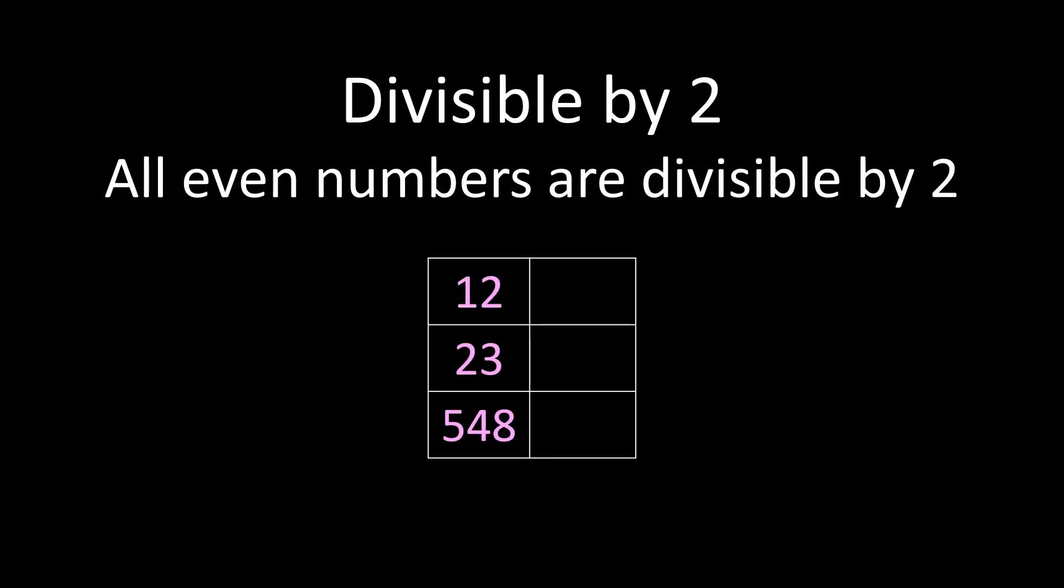Looking at a couple of examples, the first example we have 12. The last digit in 12 is a 2. 12 is even, therefore 12 is divisible by 2. In the example 23, 3 is an odd number, so 23 is not divisible by 2. And we can apply these rules to any number, even numbers as big as 548 or even larger. Looking at 548, 8 is an even number, so 548 is divisible by 2.